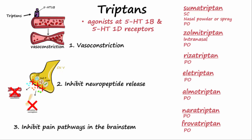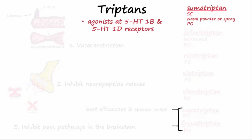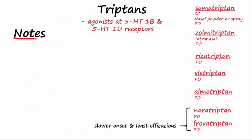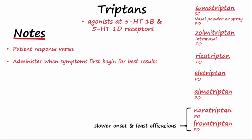All triptans have been shown to be safe and effective for most patients, but naratriptan and frovatriptan have a slower onset and appear to be the least efficacious at relieving acute migraines. Patient response varies — if one triptan doesn't work, another may be tried. It's best to take triptans early when symptoms first start, and don't use triptans for more than 10 days out of the month in order to avoid overuse headaches.